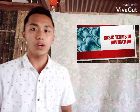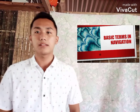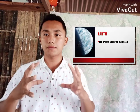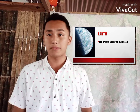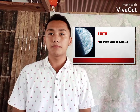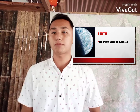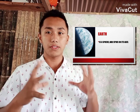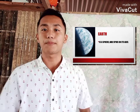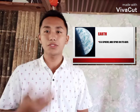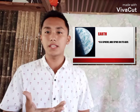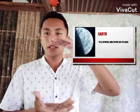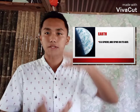First, we need to understand that our earth is a sphere. Although it is not a perfect sphere, but for navigation purposes, we say that the earth is a sphere. And it rotates on its axis through the poles — the north and the south poles.